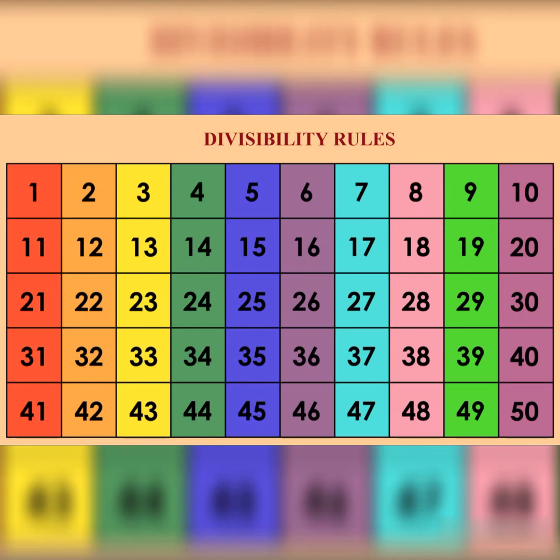Divisibility by 12 – a number is divisible by 12 if it is divisible by both 3 and 4.